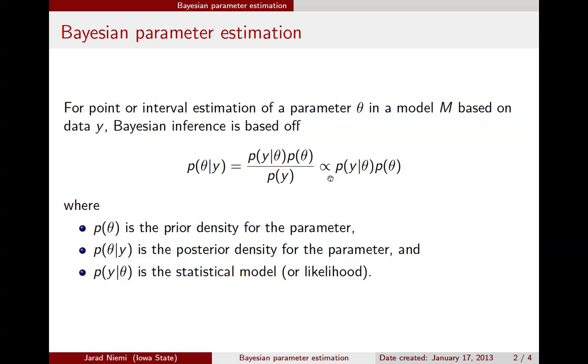If instead we do this proportionality trick, where we drop everything on this side that does not involve what's on the left side of the conditioning bar, in this case it's just everything that does not involve our parameter theta. We arrive at this result and just using that portion of the posterior is enough to get us what the posterior distribution is.